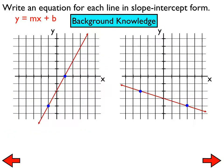Earlier this trimester, I gave you these same graphs and we had to come up with the equation for them. Then when we went into function rules, I gave you the same graphs again. A function rule is really the same thing as asking for an equation of a line. These two were both very easy because we can easily find the slope and the y-intercept — it's very clear on both graphs.